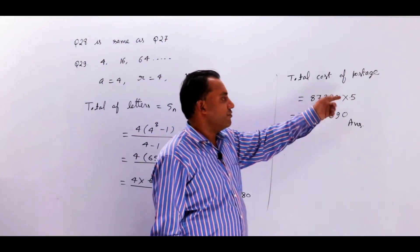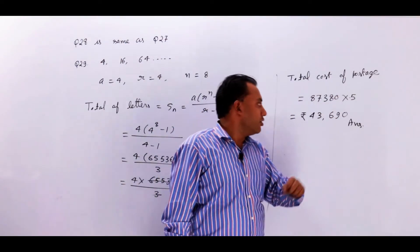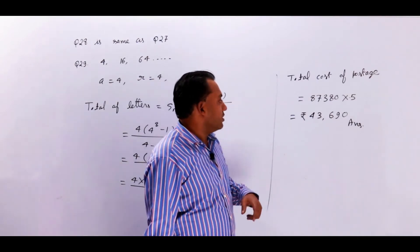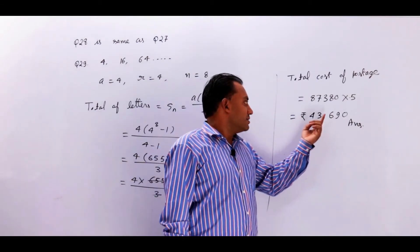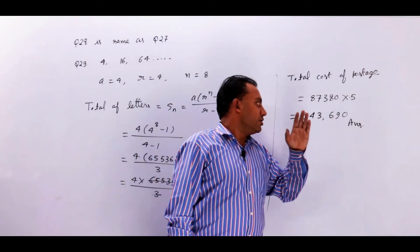In the paise, we have to know that if you multiply by 5, you multiply by 43,690 rupees.